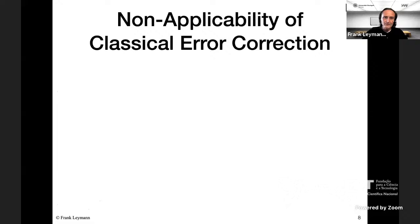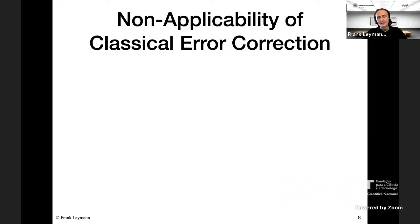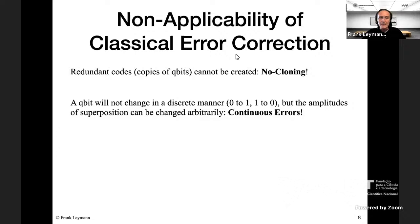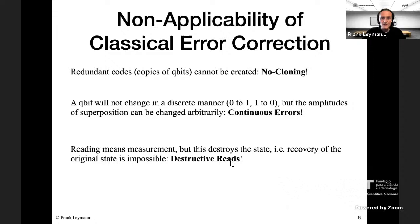Why can't we apply error correction as in classical computers? The problem is that classical error correction relies on making redundant copies of a bit — but we have the no-cloning theorem, so you can't copy a qubit. Additionally, errors in qubits are continuous, not discrete like a classical bit flipping from 0 to 1. Classical error correction doesn't apply to continuous errors. Furthermore, some classical error correction relies on measuring bits, but measuring a qubit destroys its state, so this technique can't be applied either.